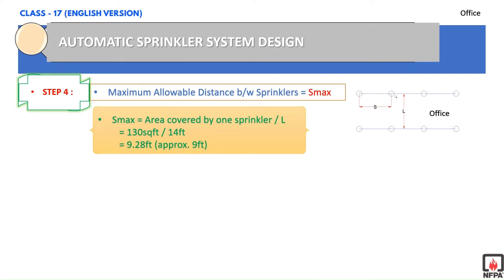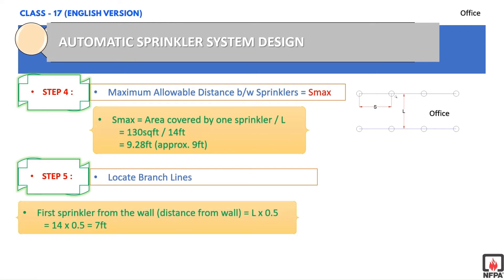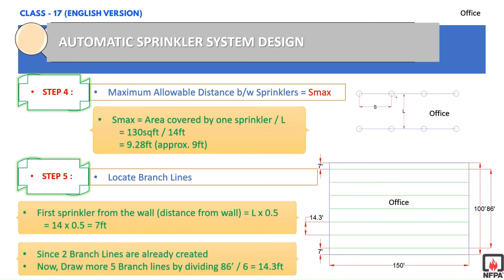Step 5: We need to draw the branch lines. From Step 2, the number of branch lines is 7 and the actual distance between branch lines L is 14 feet. The first sprinkler distance from the wall shall be half of L — that is L multiplied by 0.5 — which equals 7 feet. As you can see in the drawing, the 2 branch lines from the walls are at 7 feet distance. The remaining 5 branch lines are placed by dividing the remaining 86 feet by 6, giving a spacing of 14.3 feet, as shown on screen.